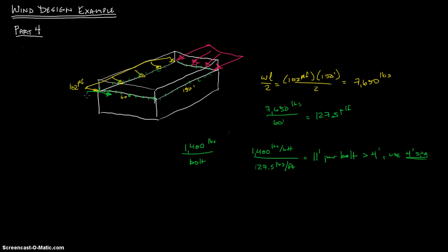If it's not intuitive, take a look at it on this side of the building. 102 PLF over here, and you have 60 foot. 102 times 60 divided by 2 equals 3060. So you're going to have 3060 pounds as your reaction or your max shear. Then you're going to divide it by 150 as your depth. 3060 divided by 150, and that's going to equal 20.4.